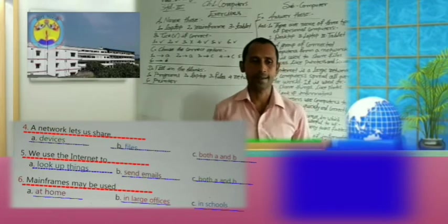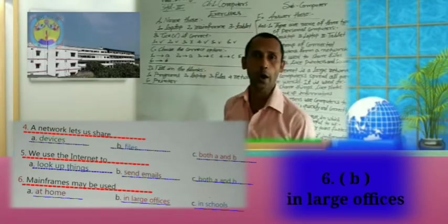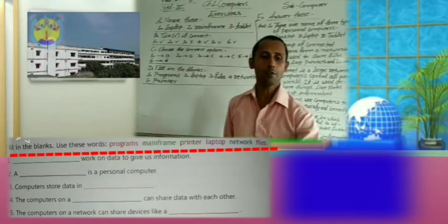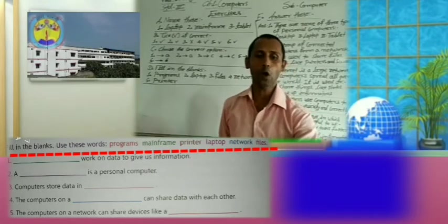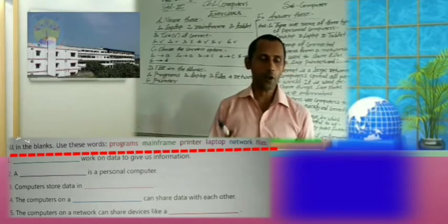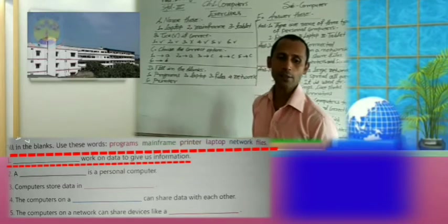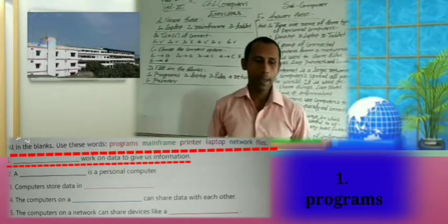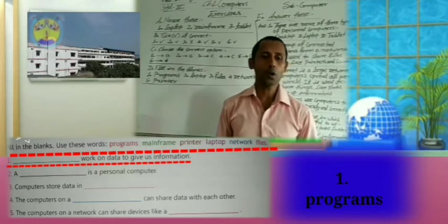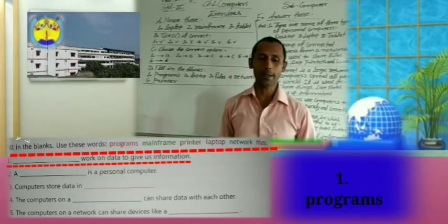Now, fill in the blanks. Use these words: programs, mainframe, printer, laptop, network, and files. First: blank works on data to give us information. Think and give the answer. Yes, you are right — programs. Programs work on data to give us information. So write here: programs.